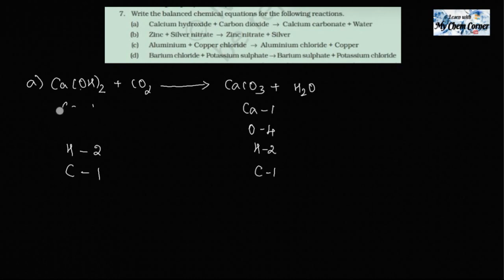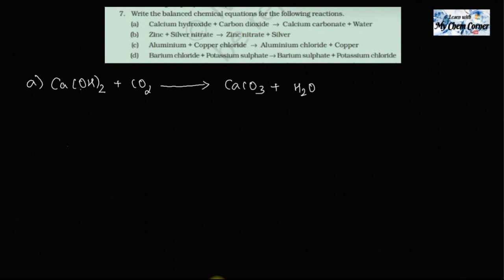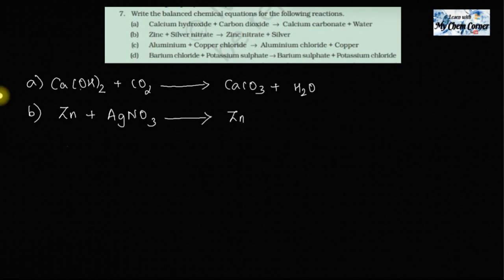The second one is zinc reacting with silver nitrate — AgNO₃ — giving zinc nitrate plus silver. Zinc nitrate is Zn(NO₃)₂ because NO₃ has a minus one charge and Zn has a plus two charge; when you interchange the charges it becomes whole twice.